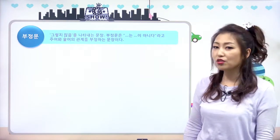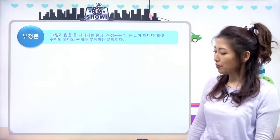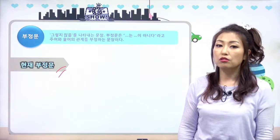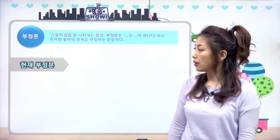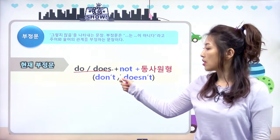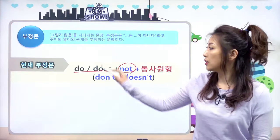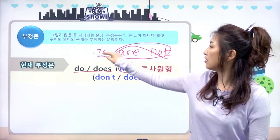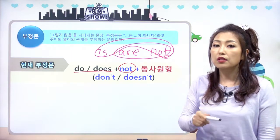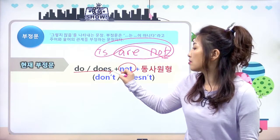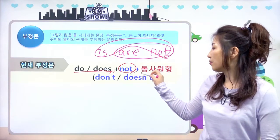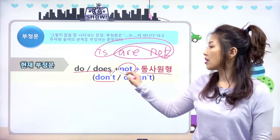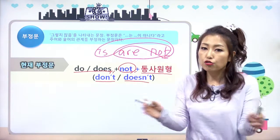본격적으로 do, does가 어떤 도움을 주는지 살펴볼게요. 현재 시제 부정문은 do, does를 써요. do, does에 not을 붙이는 거예요. 비동사는 is, are에 그냥 not만 붙였는데, 일반 동사는 일반 동사 자체에는 아무것도 붙지 않아요. do, does를 앞세우고 거기에 not을 붙인 다음에 동사 원형을 뒤에 쓰는 거예요. 그래서 do + not = don't, does + not = doesn't 줄임말로 사용하는 거예요.